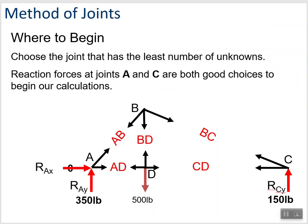They're saying A and C are both good choices. I might go over here to C because I've got the least number of vectors. I've got two unknowns. Let's start off here solving for BC.